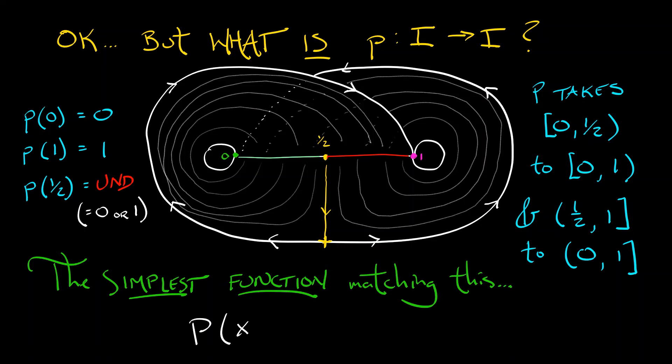This function is P(x) equals two times x mod one. Think about that.